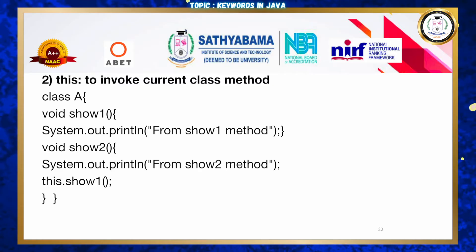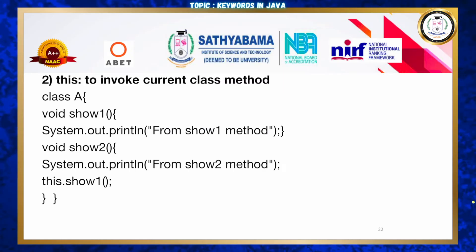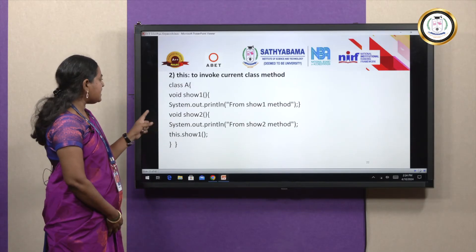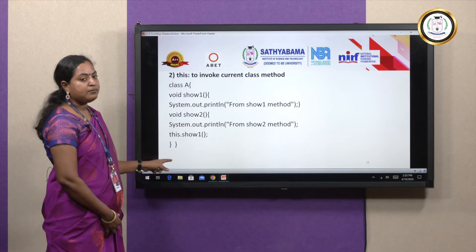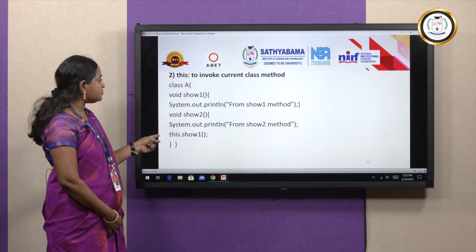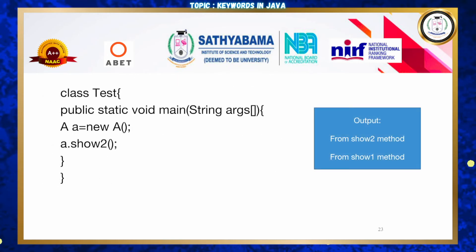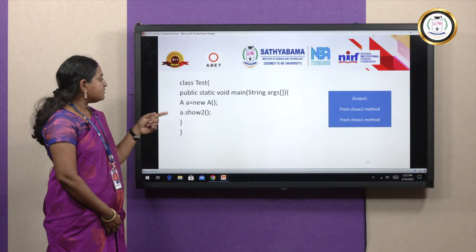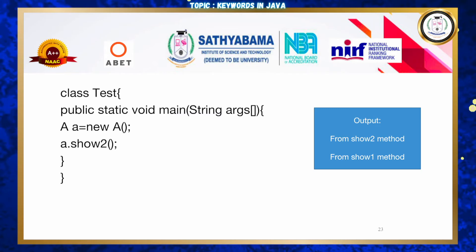Second use — 'this' to invoke the current class method. In class A with methods void show1 and void show2, inside show2 we call 'this.show1()' which refers to the current class method show1. In the test class, creating object 'A a = new A()' and calling 'a.show2()' produces output 'from show2 method' and then 'from show1 method'.